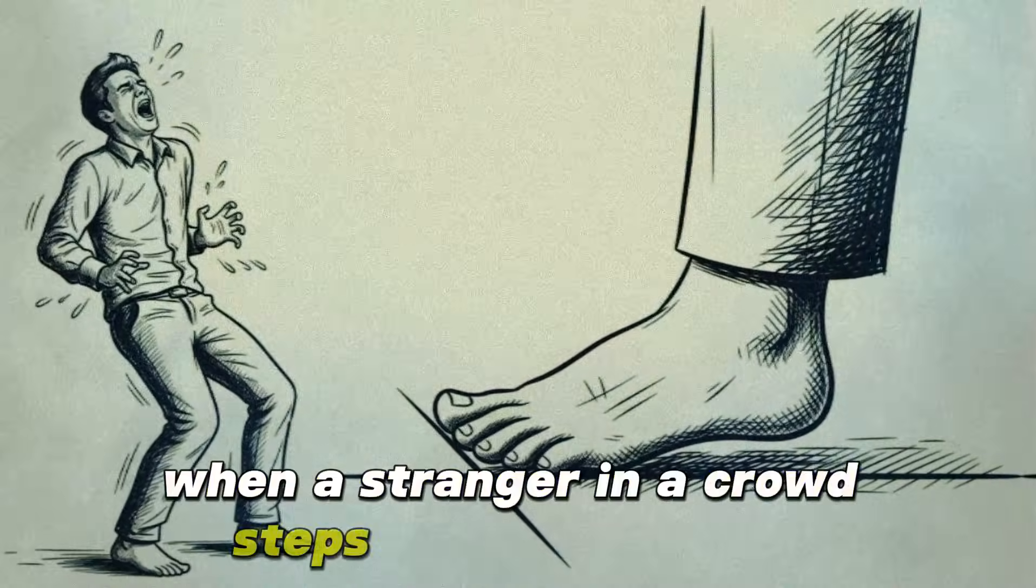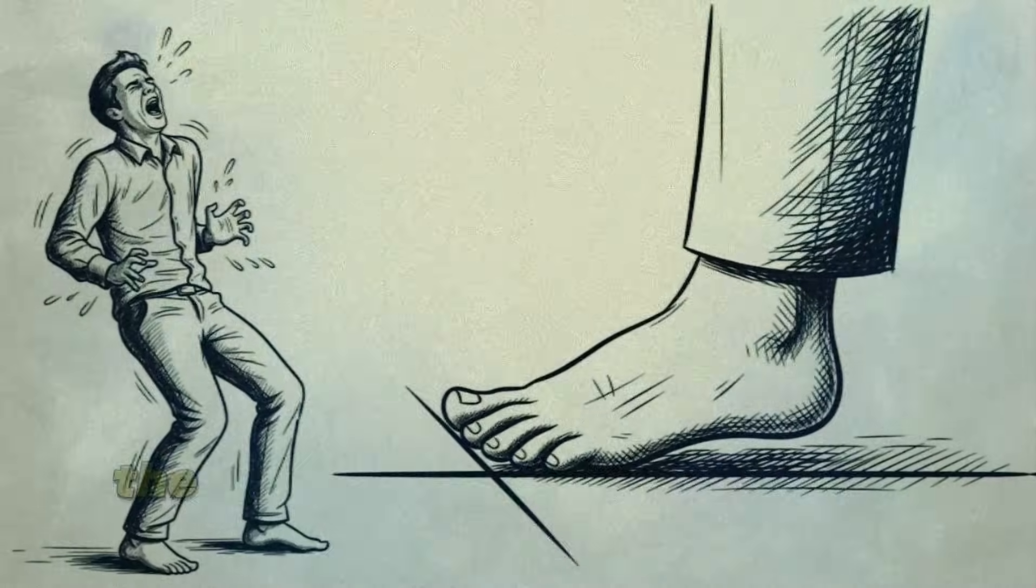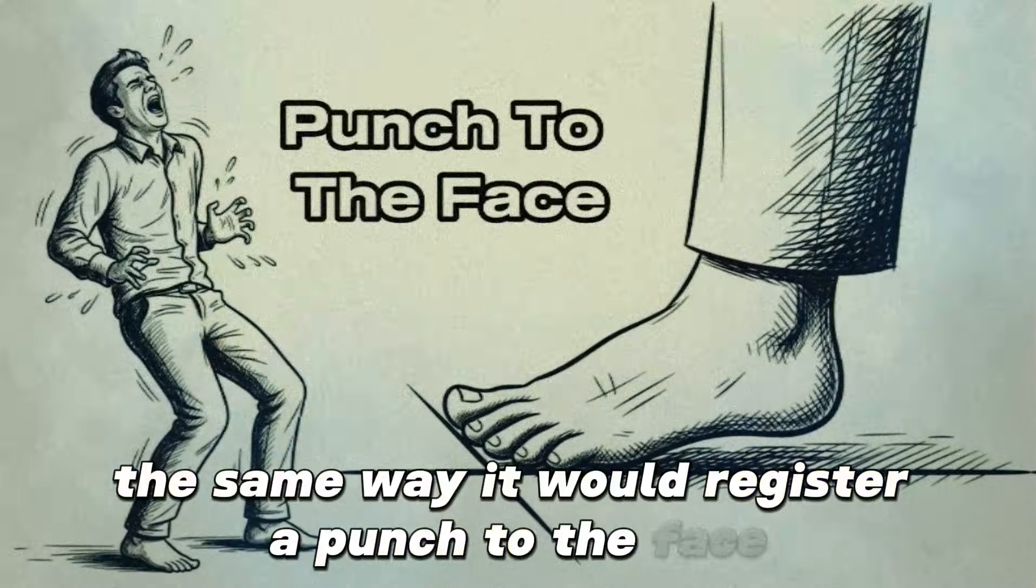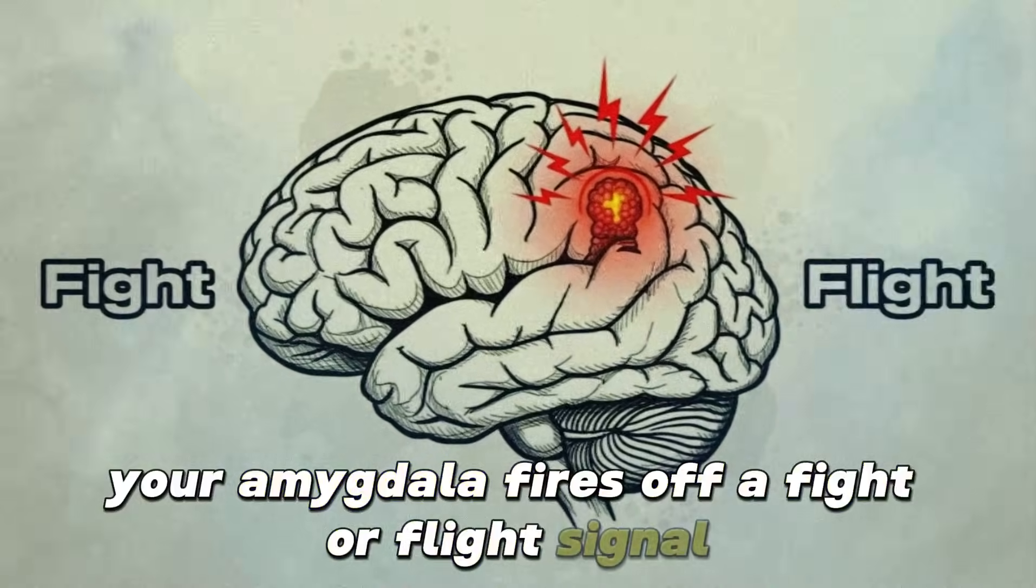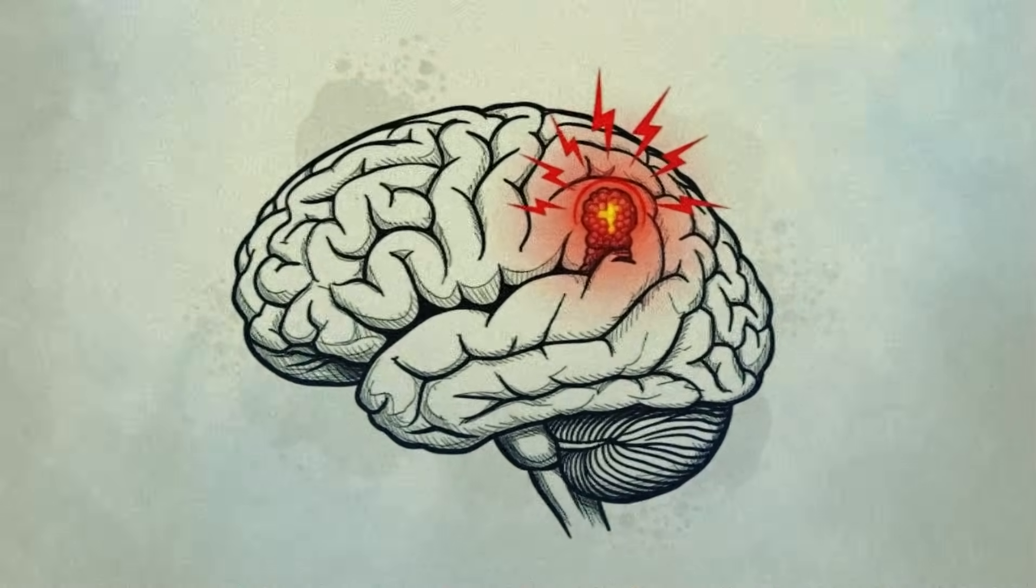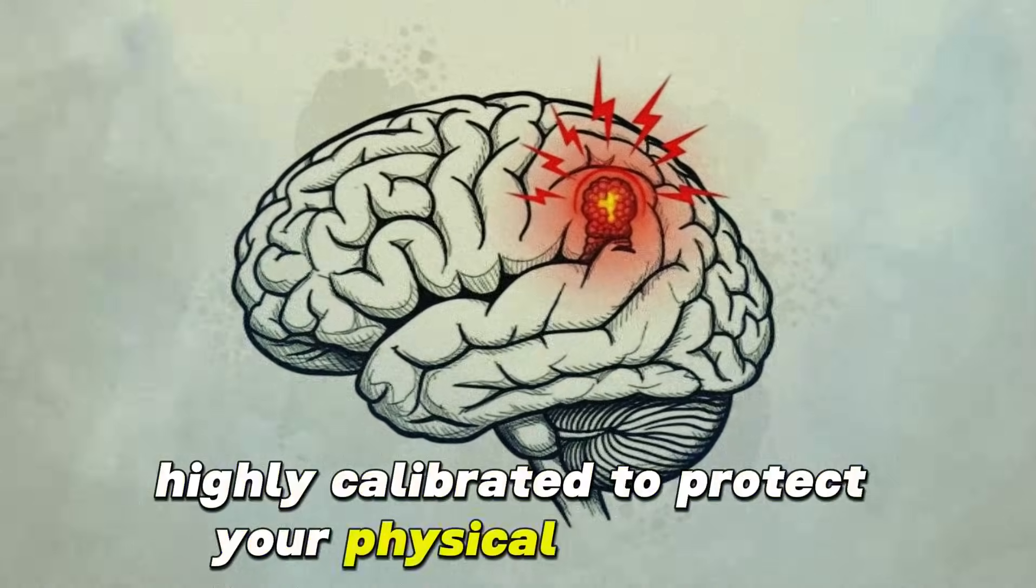When a stranger in a crowd steps into your bubble, your brain registers it as a physical threat the same way it would register a punch to the face. Your amygdala fires off a fight-or-flight signal. You aren't being dramatic. Your tactile defense system is simply highly calibrated to protect your physical autonomy.